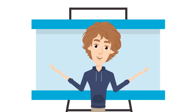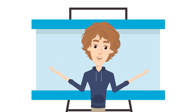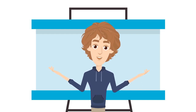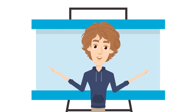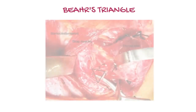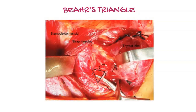To avoid recurrent laryngeal nerve injury during neck surgeries, various methods of RLN identification have been identified. One of which is Bear's triangle, where notation one is the common carotid artery, two is the inferior thyroid artery, and three is the recurrent laryngeal nerve — seen after retracting the thyroid lobe medially and strap muscles laterally.